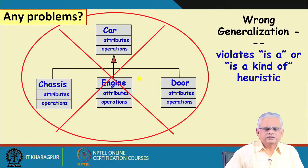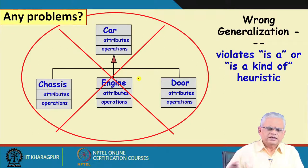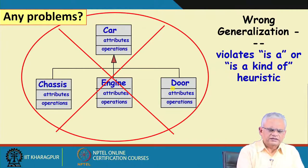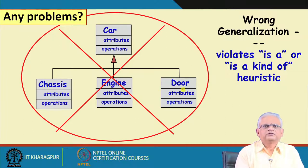This is not correct. The classes here have a different relation. The car is an aggregate of chassis, engine, and door — a car consists of chassis, engine, and door. It is not an inheritance relation.